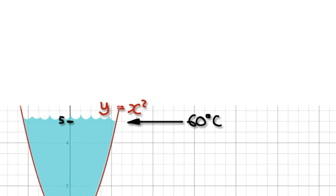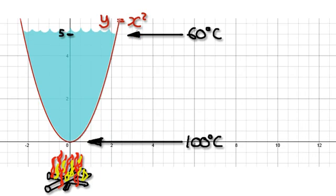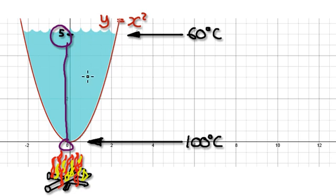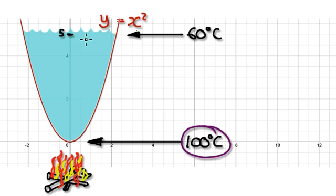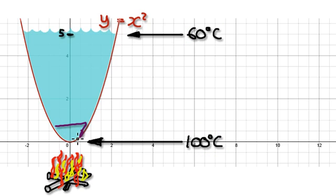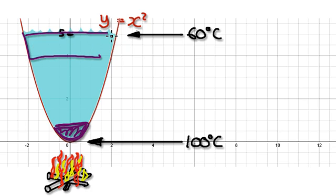Let's give you guys an example. Let's say we're heating up this massive pot of water here. The height of this pot is an unrealistic five meters. Down here it's 100 degrees Celsius, up here it's 60 degrees Celsius. So down here it's really hot, but there's less of a volume down here. Up here it's cooler, but there's more of a volume up here.